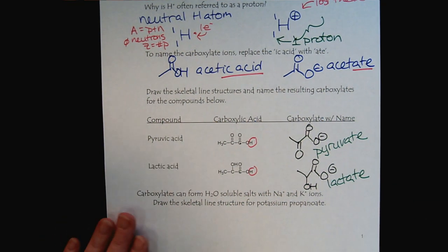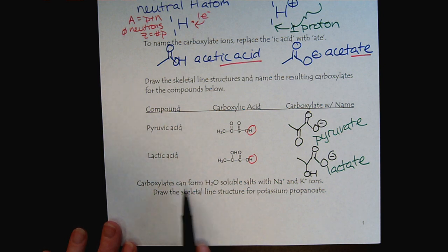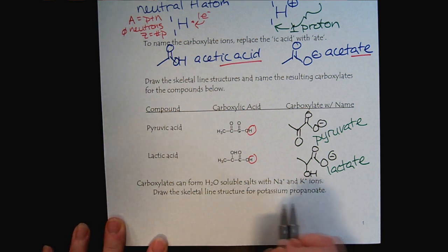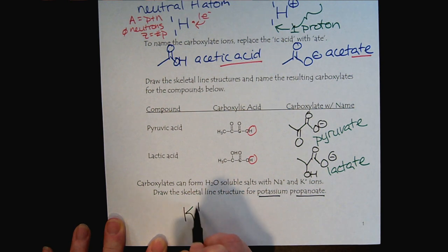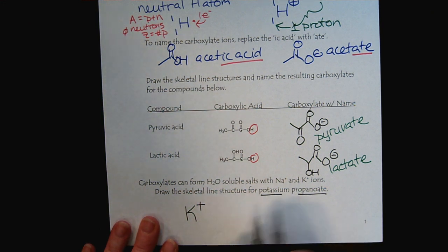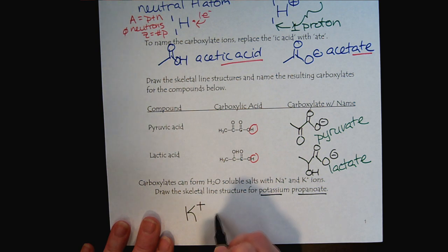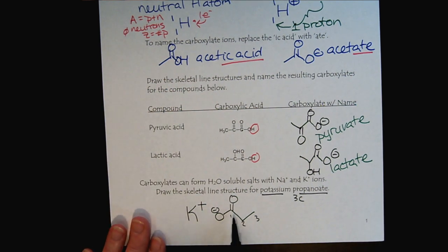There's a little practice there with the language. And then let's look at another example of carboxylates that we run into all the time. Carboxylates can form water-soluble salts with sodium and potassium ions. Here's an example. We have potassium propanoate. We recognize potassium as an alkali metal. It will always be in the positive state. And then propanoate, there's our three carbon. So that would be the skeletal line structure for potassium propanoate.